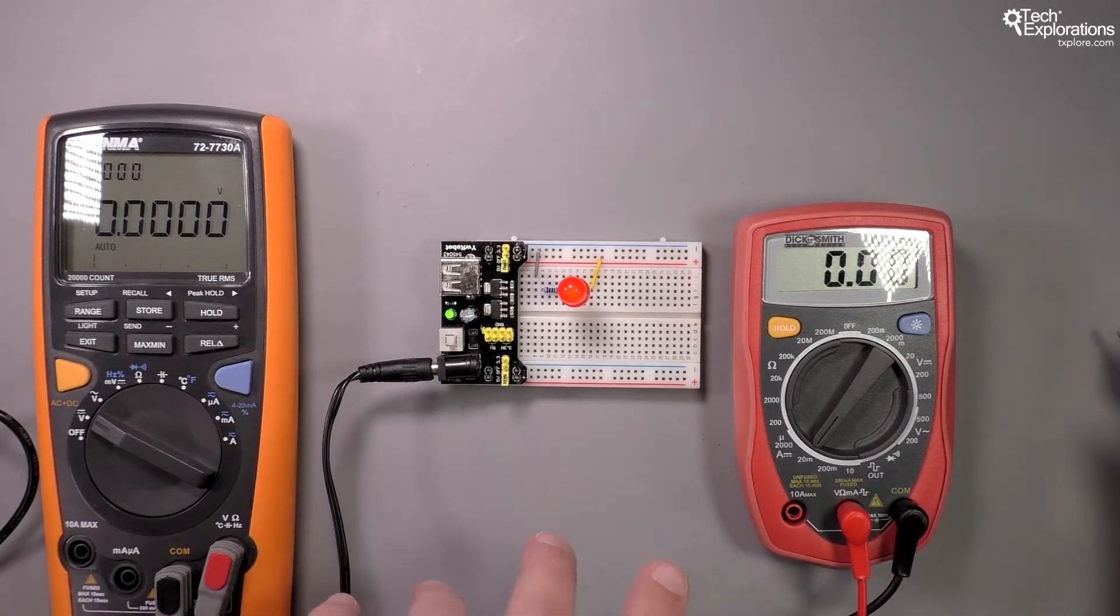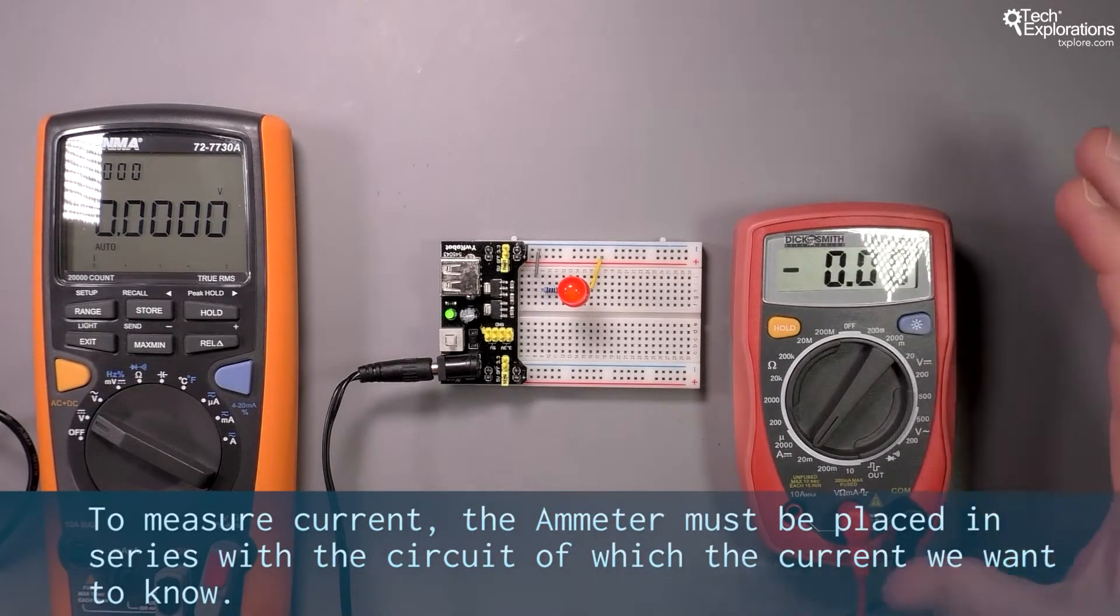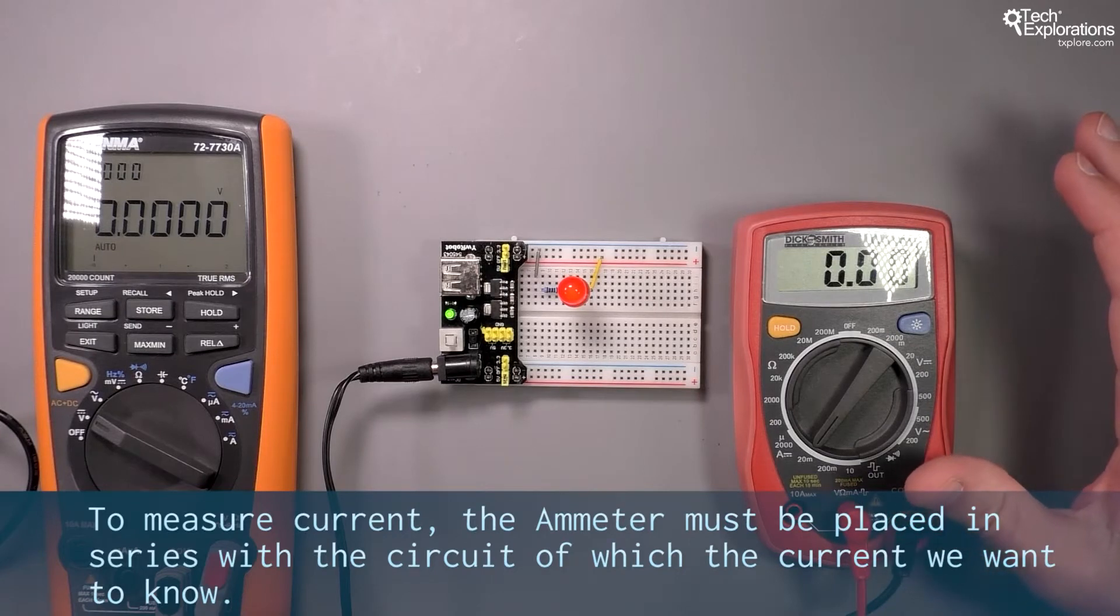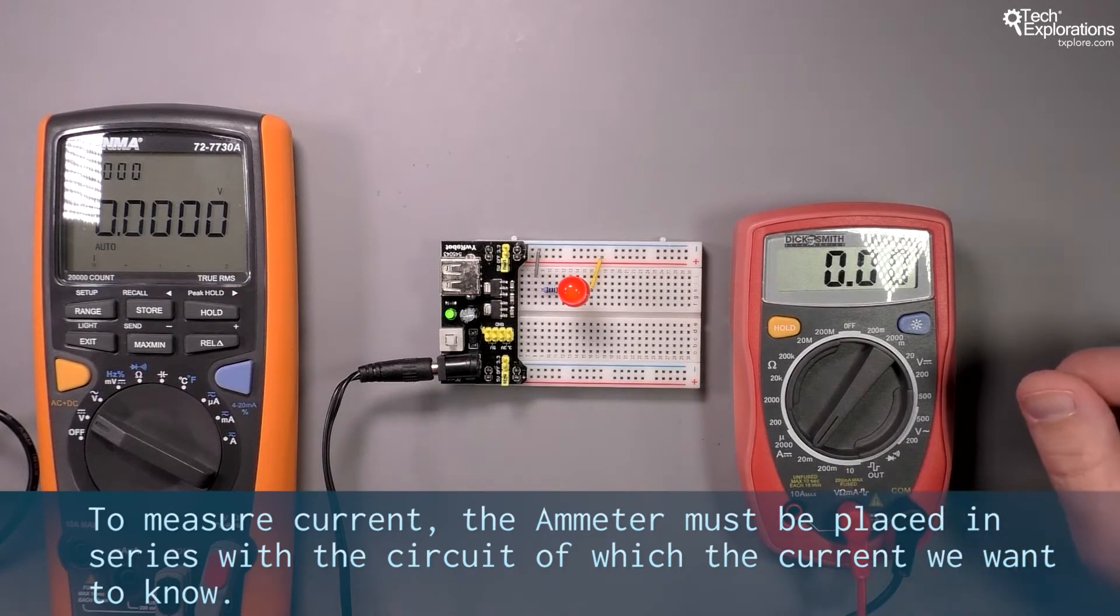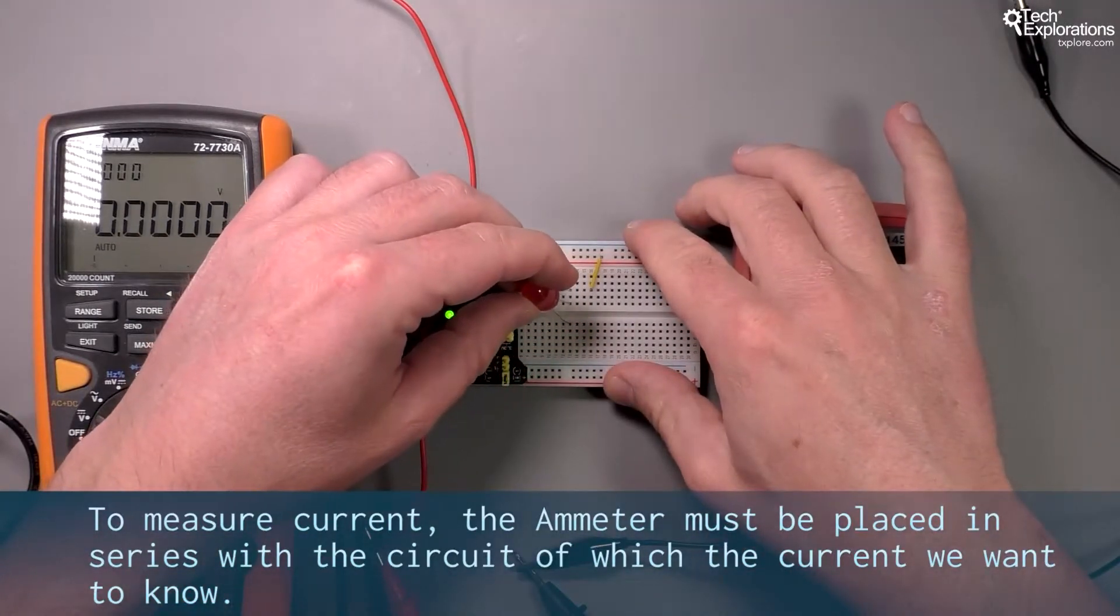In order to measure the current flowing through a device, I need to put my multimeter in series with that device. To do that, I'm going to make a small change to my circuit.